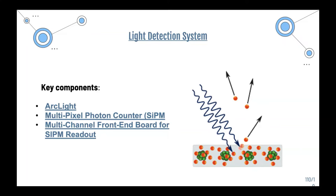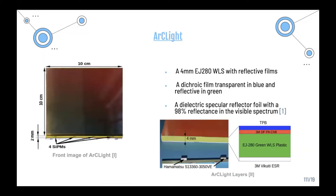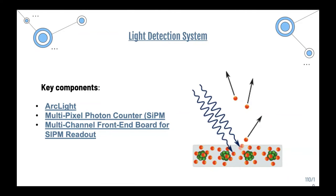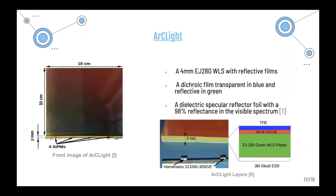The key components of the light detection system are the Arc Light, the SiPM — or multi-pixel photon counter — and the 64-channel front-end readout. The Arc Light is a device able to detect light over large areas with a photon detection efficiency of a few percent. Its dielectric structure allows it to be placed in an electric field without its functionality being affected. It detects UV photons from argon interactions and shifts their wavelength so they can be read by the SiPM. It has three layers: a 128nm wavelength shifter with reflective films, a dichroic film transparent in blue and reflective in green, and a dielectric specular reflective foil with 98% reflectance in the visible spectrum.